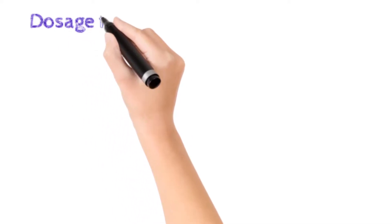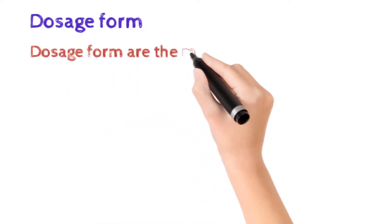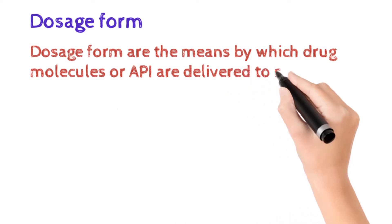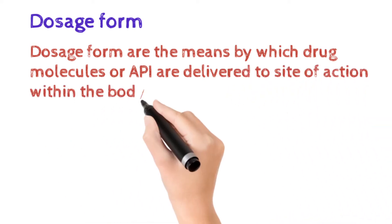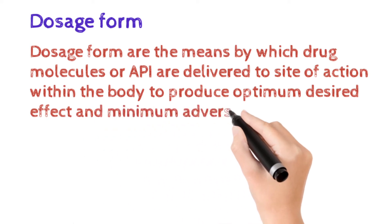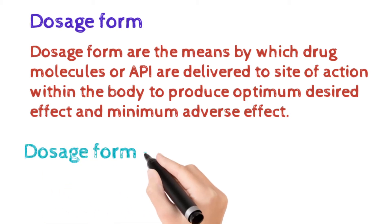Here is the definition of Dosage Form. Dosage Forms are the means by which drug molecules or API are delivered to the site of action within the body to produce optimum desired effect and minimum adverse effect. When we take any drug, it goes to the stomach, it gets dissolved, it is absorbed, it acts on specific receptors and shows the action through any organ.